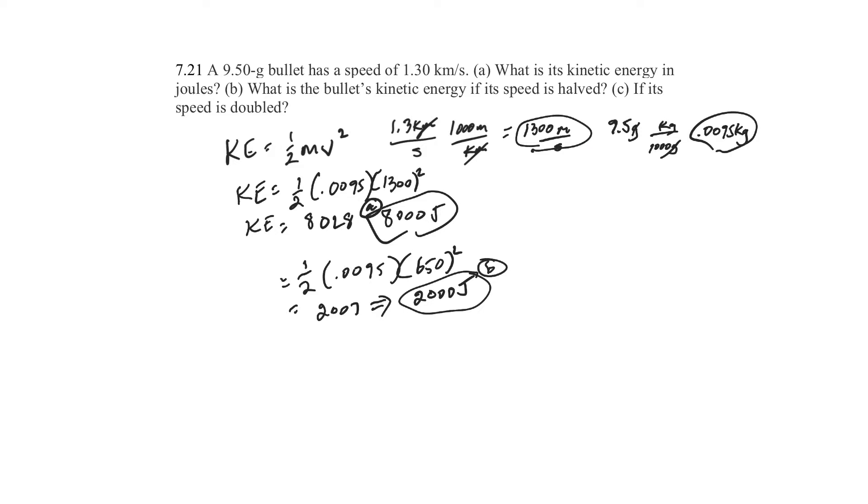So instead of 1,300, I go to 2,600. Do you see that it's going to go up by 4 times? Because it's 2 times 2. It's 2 squared. So my guess, it's going to be 32. That's my guess. Let's see what it is.